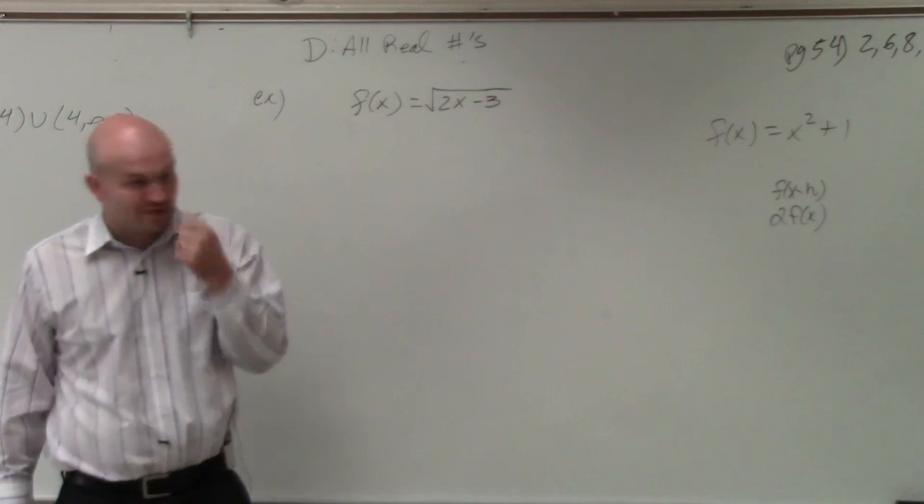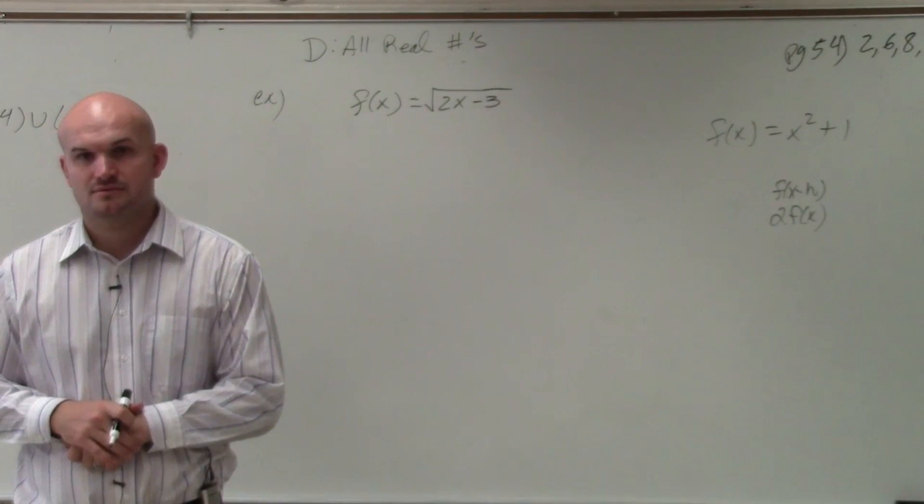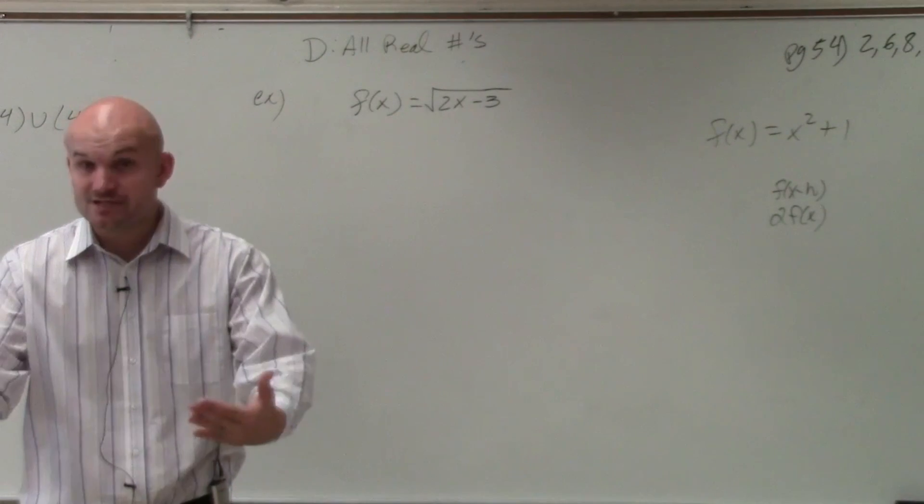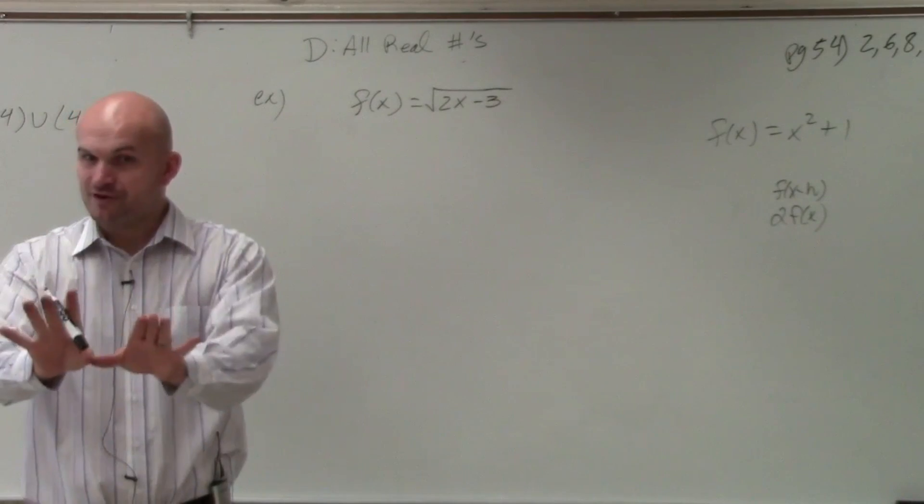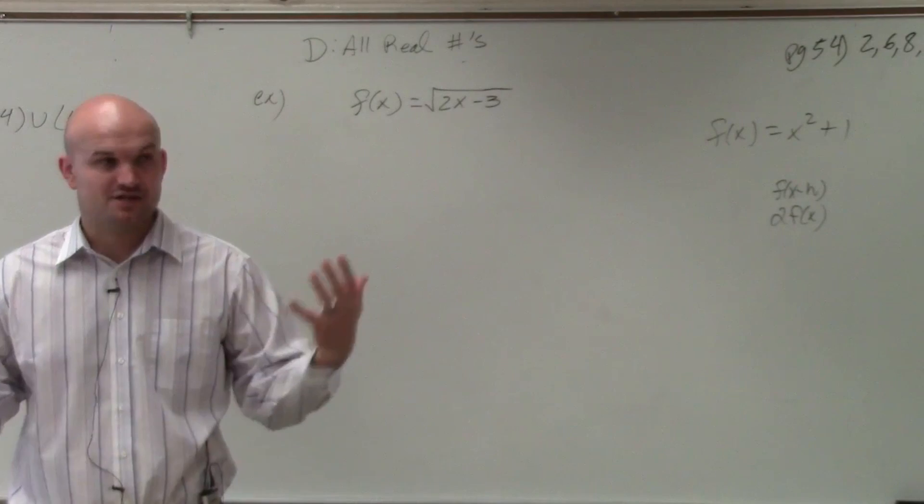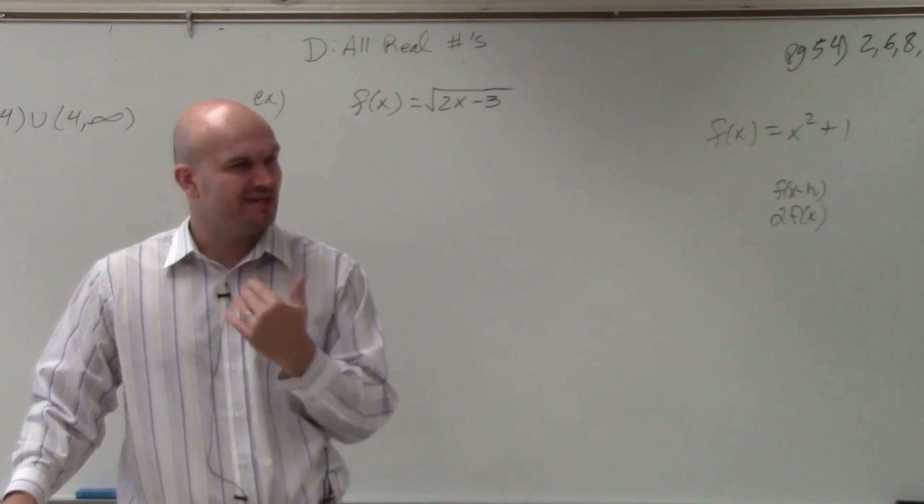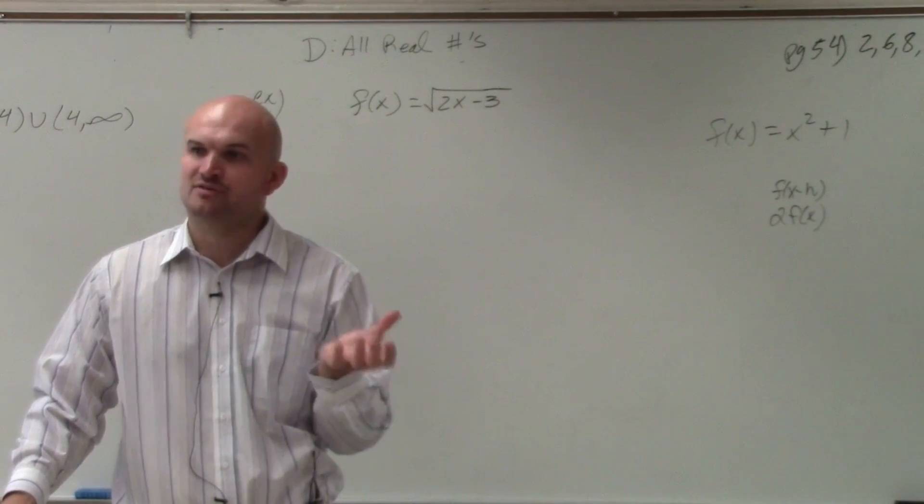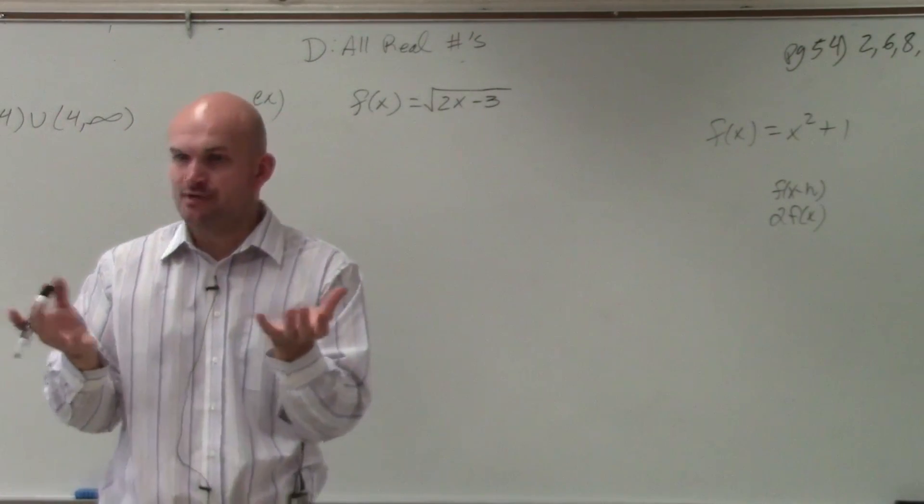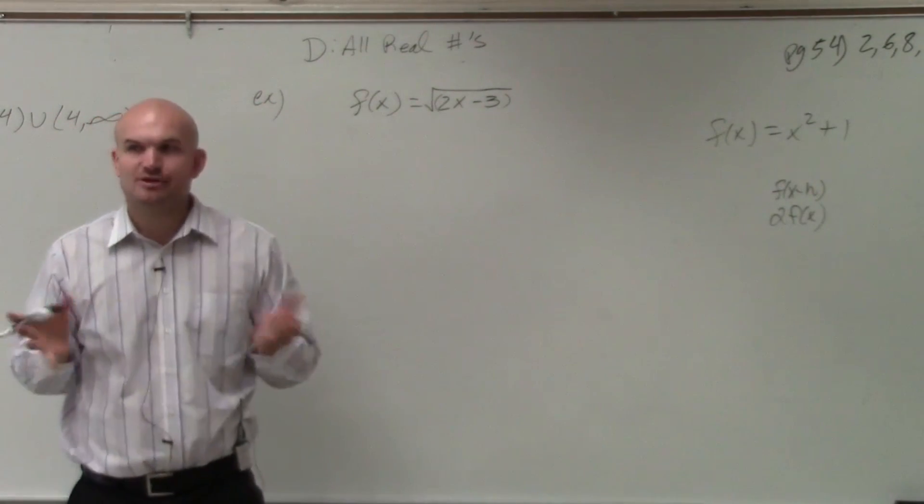We have f of x equals square root of 2x minus 3. Is there any restriction implied or any restriction given to us? Yeah. But is there any restriction given to us? No. So the implied domain is all real numbers, right? However, we realize that there's an x under a radical, right? And we know that whenever there's an x under a radical, it's not so much actually, I can see how what I wrote down could be confusing. Because it's not so much x has to be greater than or equal to 0, but it's the quantity under the radical has to be greater than or equal to 0. This quantity that you're taking the square root of has to be greater than or equal to 0.